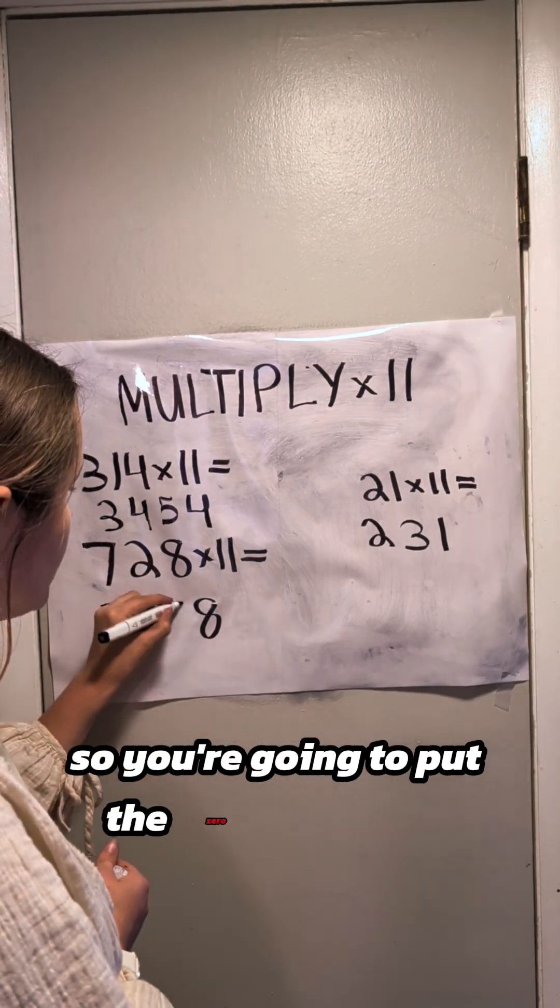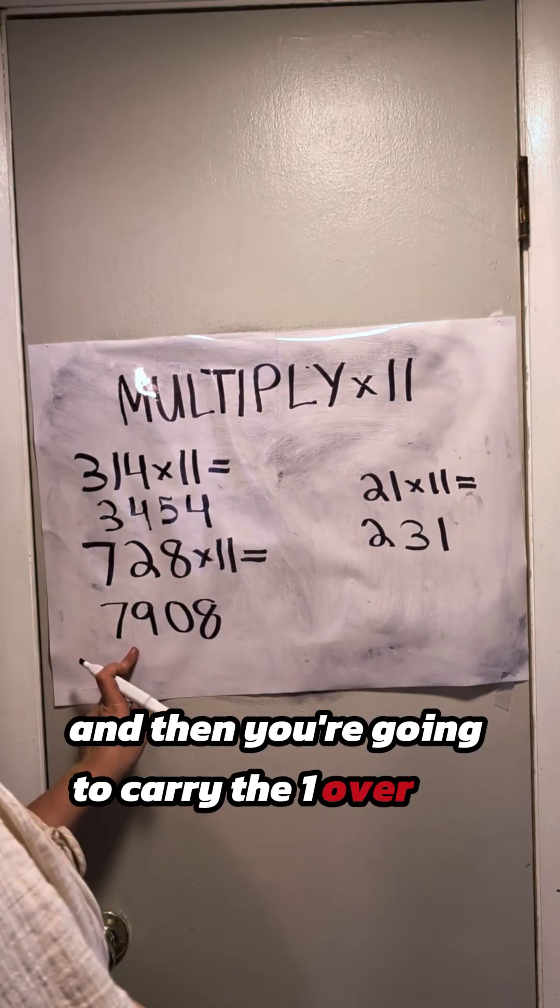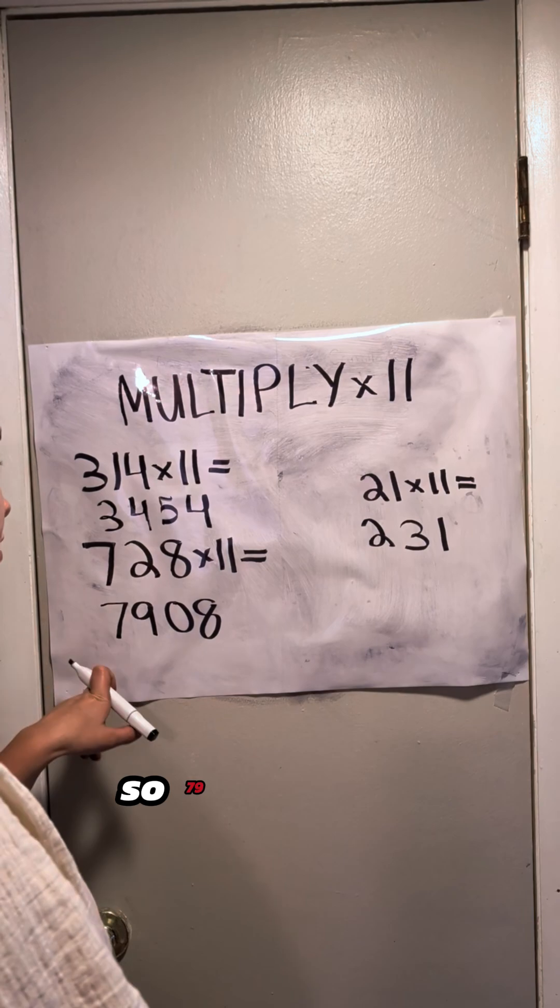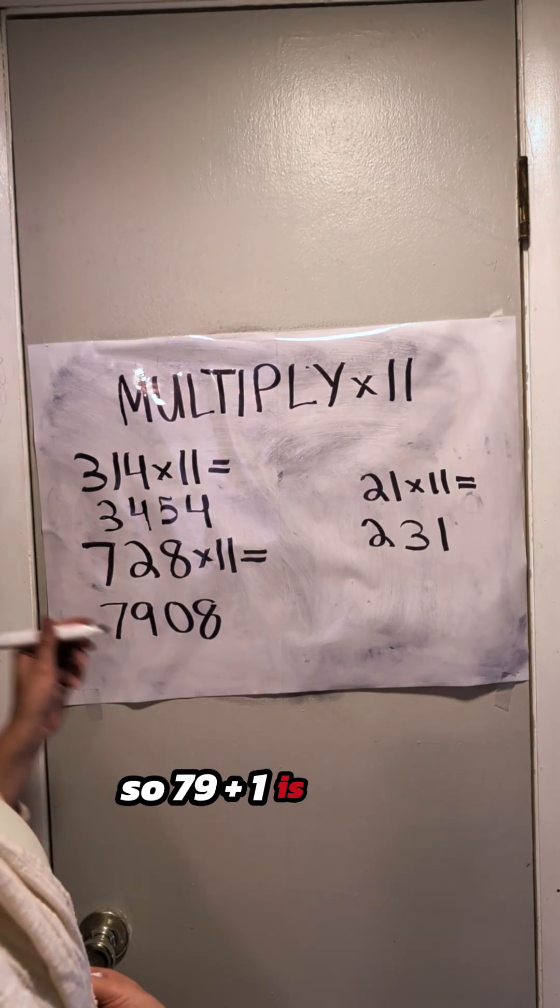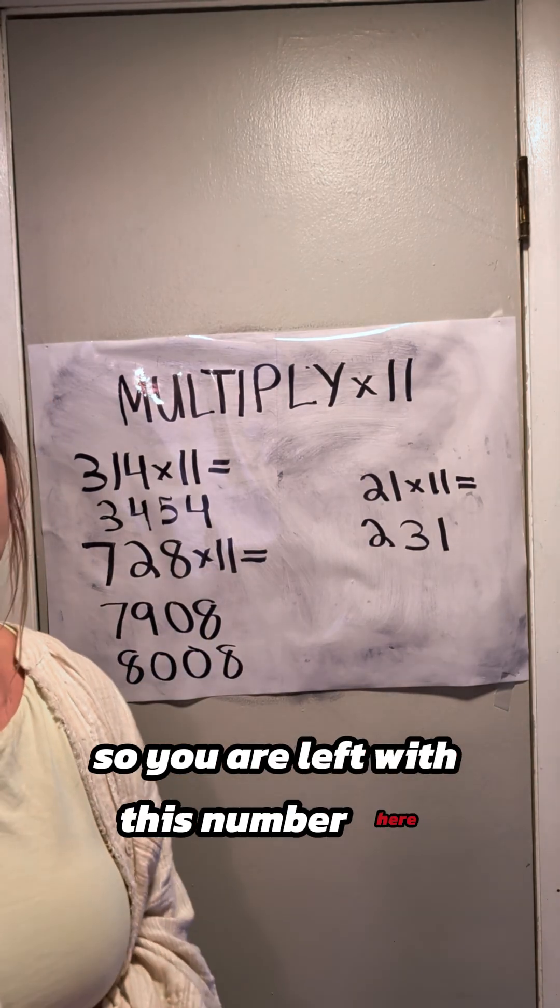So you're going to put the 0 right here, and then you're going to carry the 1 over to 79. So 79 plus 1 is 80, so you are left with this number here.